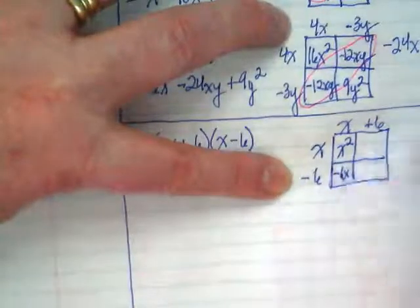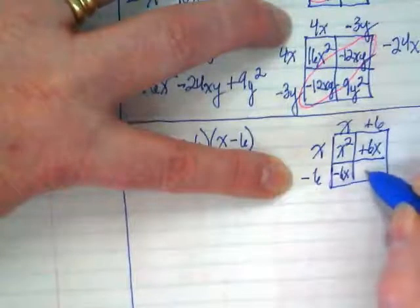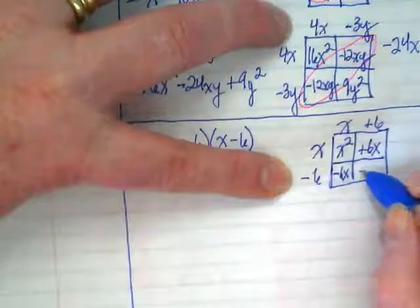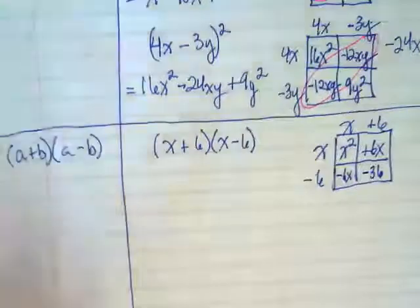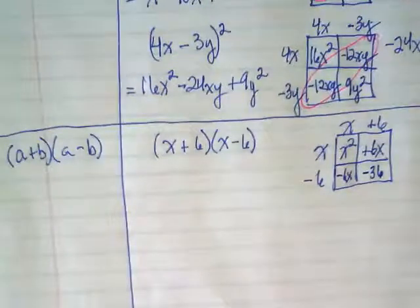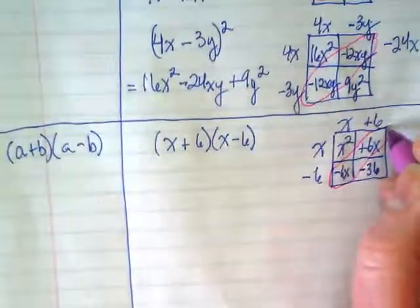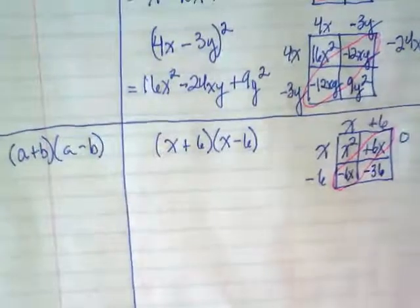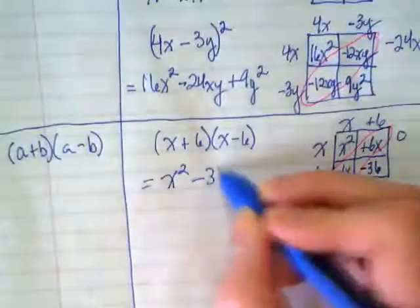And let's fill in our grid. We get x². -6x. Positive 6x. And what's -6 times 6? -36. What's happening with my combined-like terms here? They cancel each other out. They cancel each other out. So we get 0. That means the answer to this is x² minus 36.